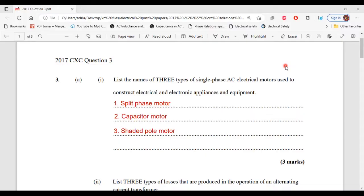Part one of A says, list the names of three types of single-phase AC electrical motors used to construct electrical and electronic appliances and equipment. The three types of single-phase AC electrical motors are split-phase motor, capacitor motor, and shaded pole motor. That's it for part one of A.